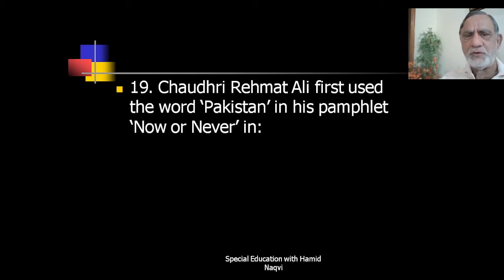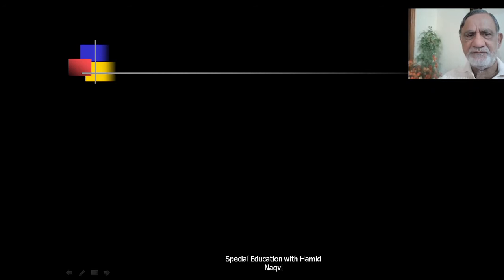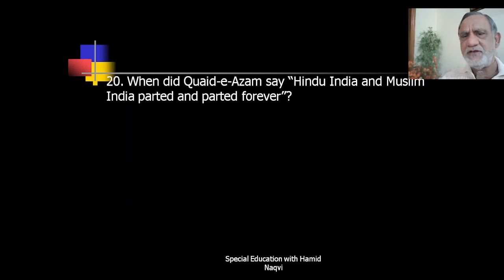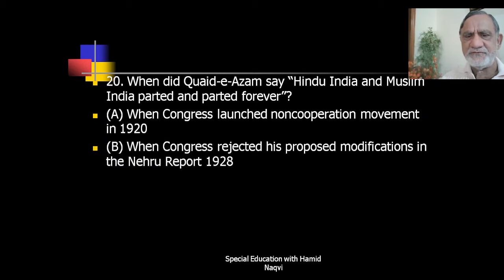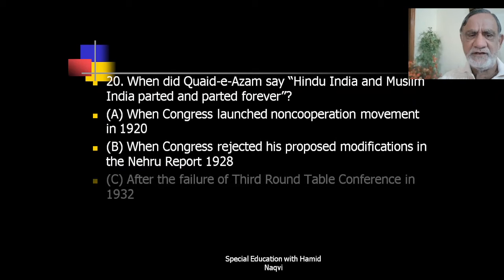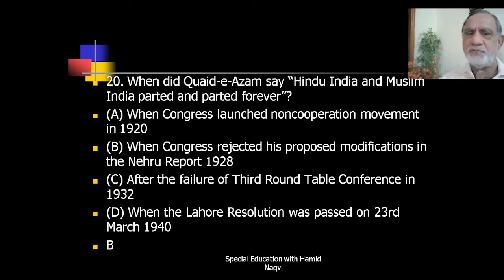Chaudhry Rahmat Ali first used the word 'Pakistan' in his pamphlet 'Now or Never' in year 1933. When did Quaid-e-Azam say 'Hindu India and Muslim India parted and parted forever'? The correct answer is B — when Congress rejected his proposed modification in the Nehru Report in 1928.